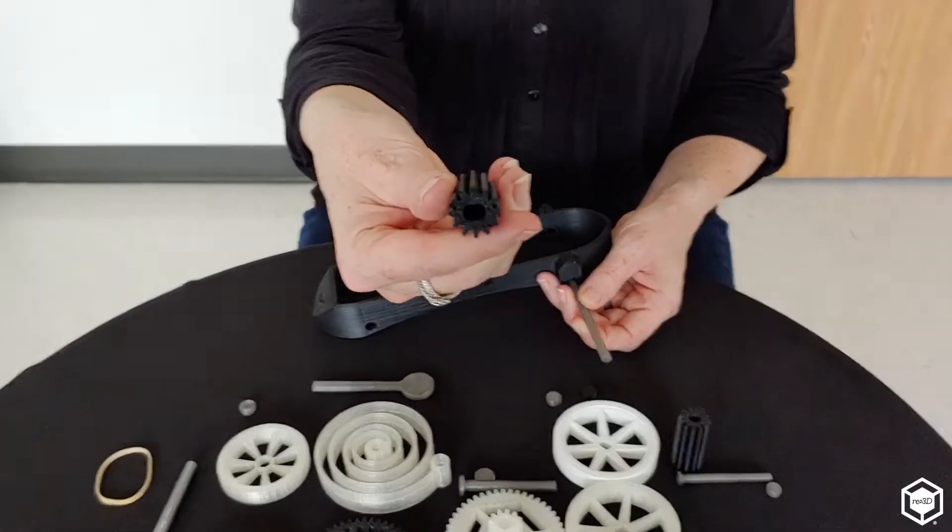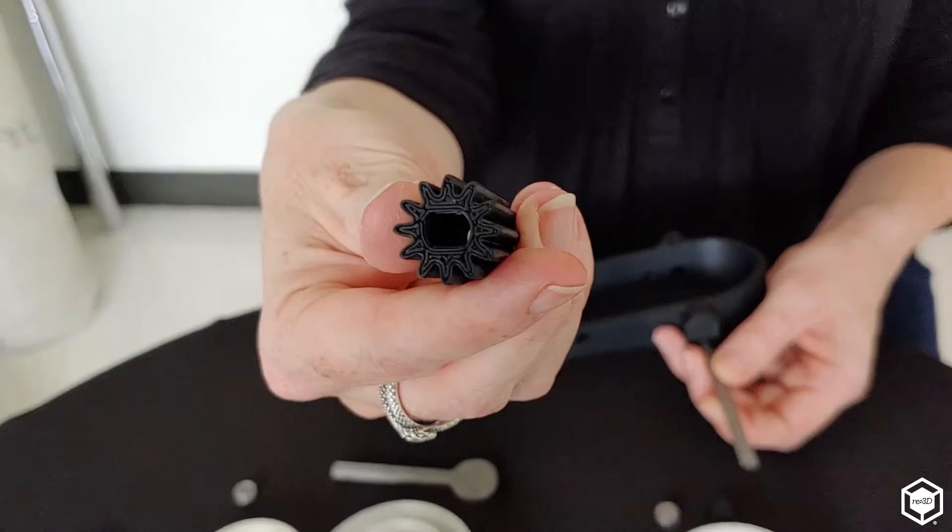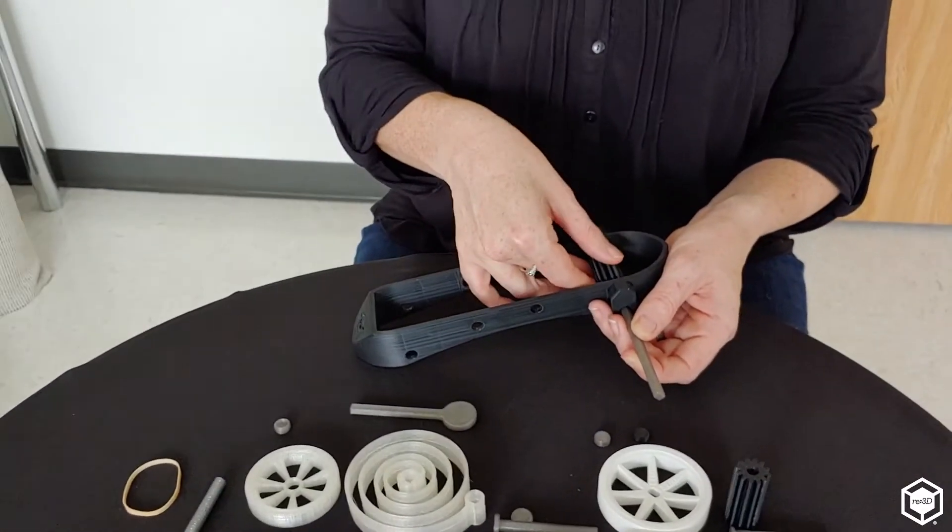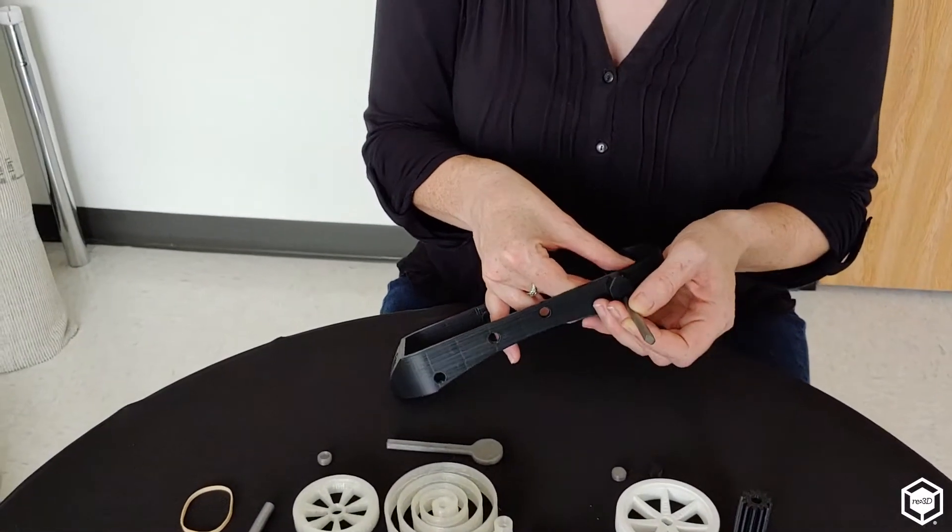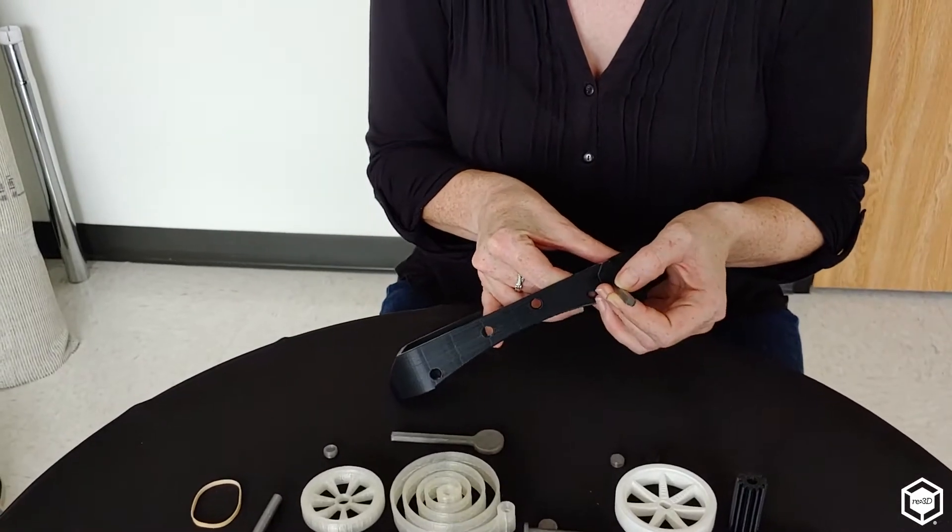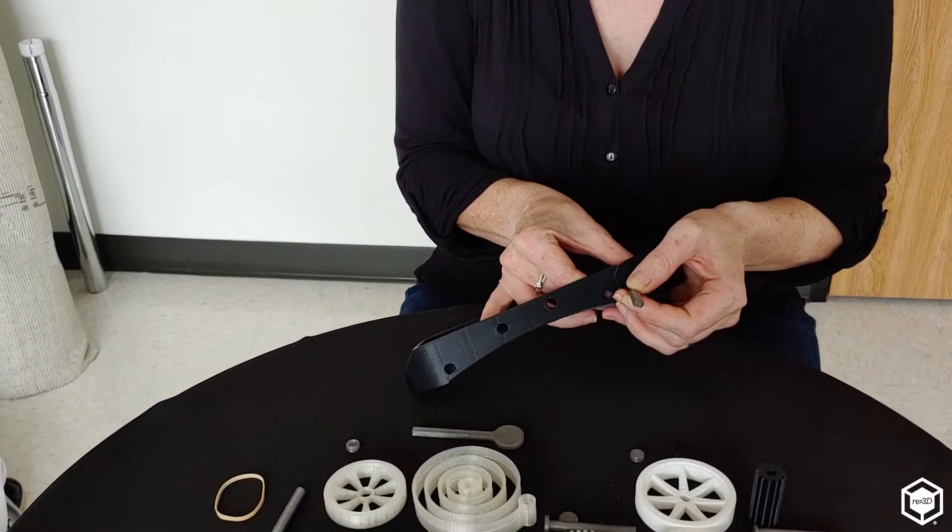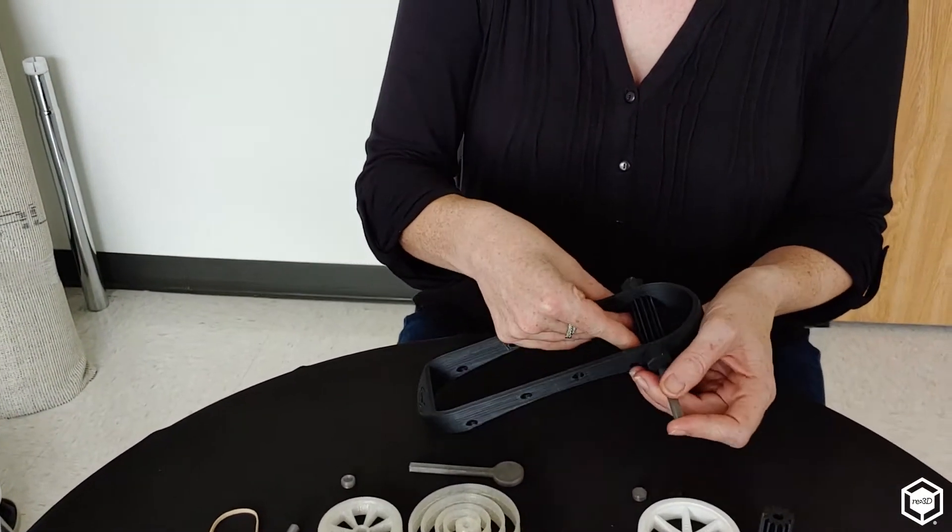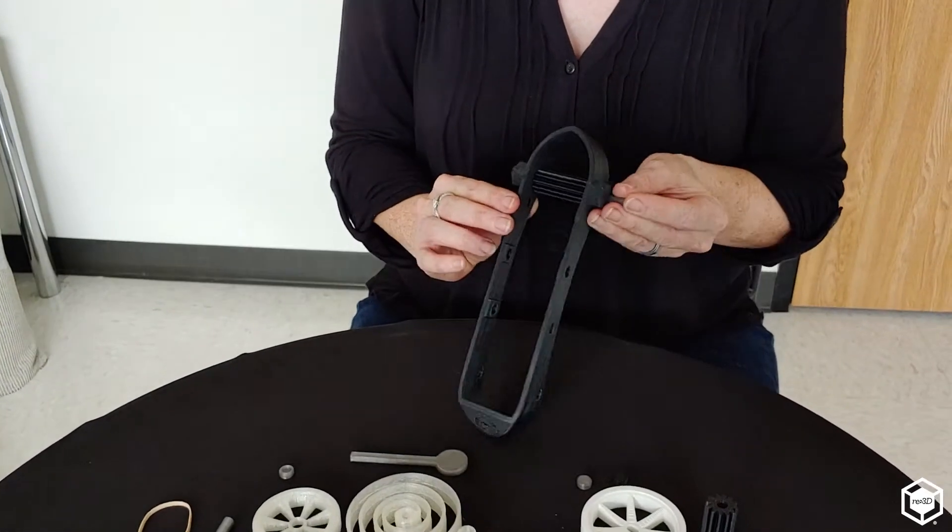We'll take the gear with the oval-shaped hole and put it between the chassis and the holes. Slide that axle onto the gear and push it out the other side.